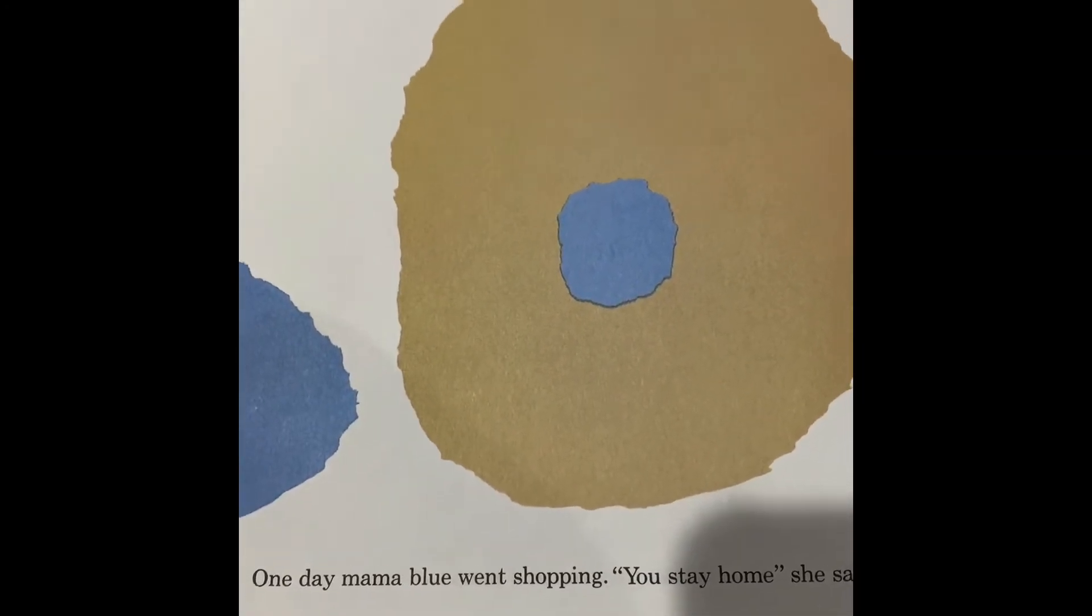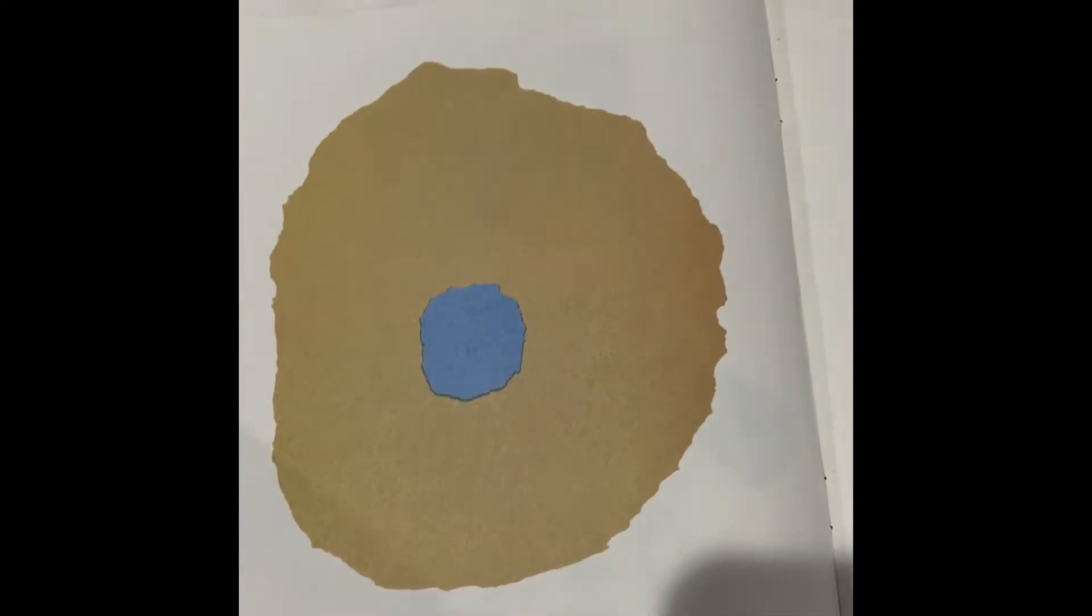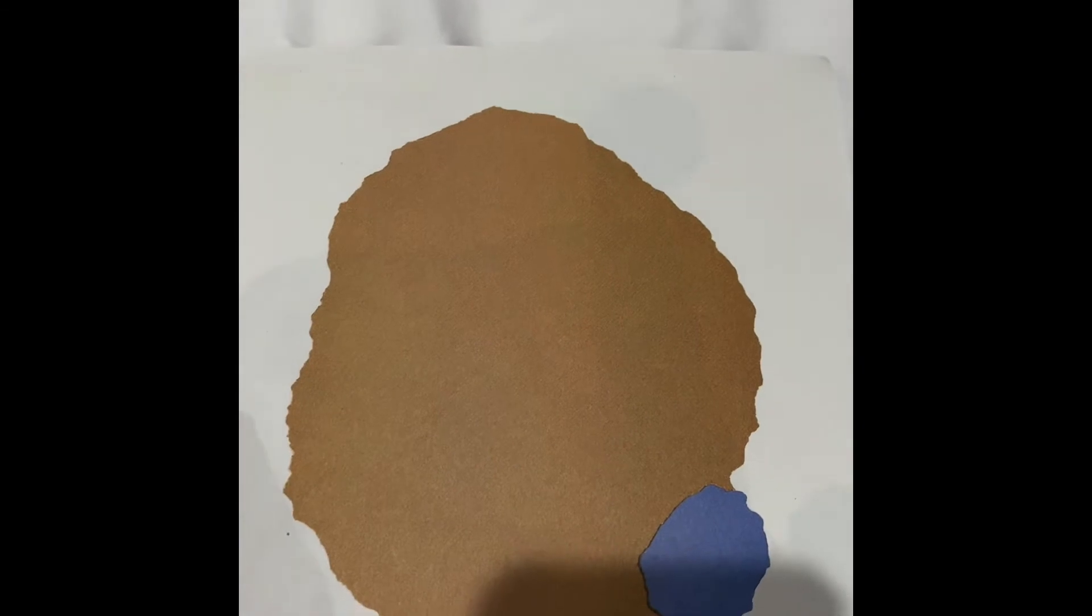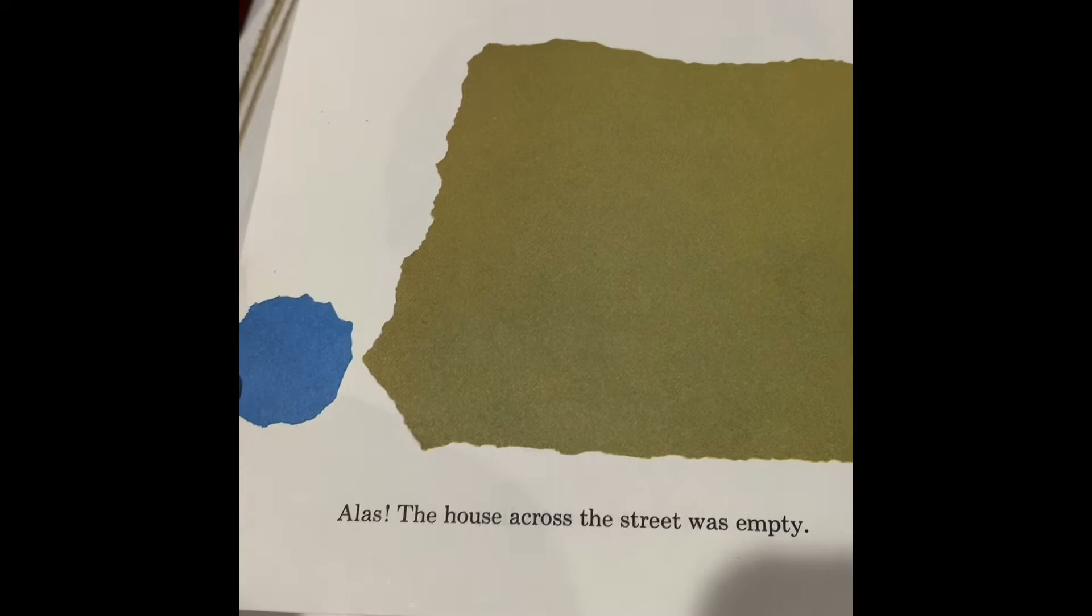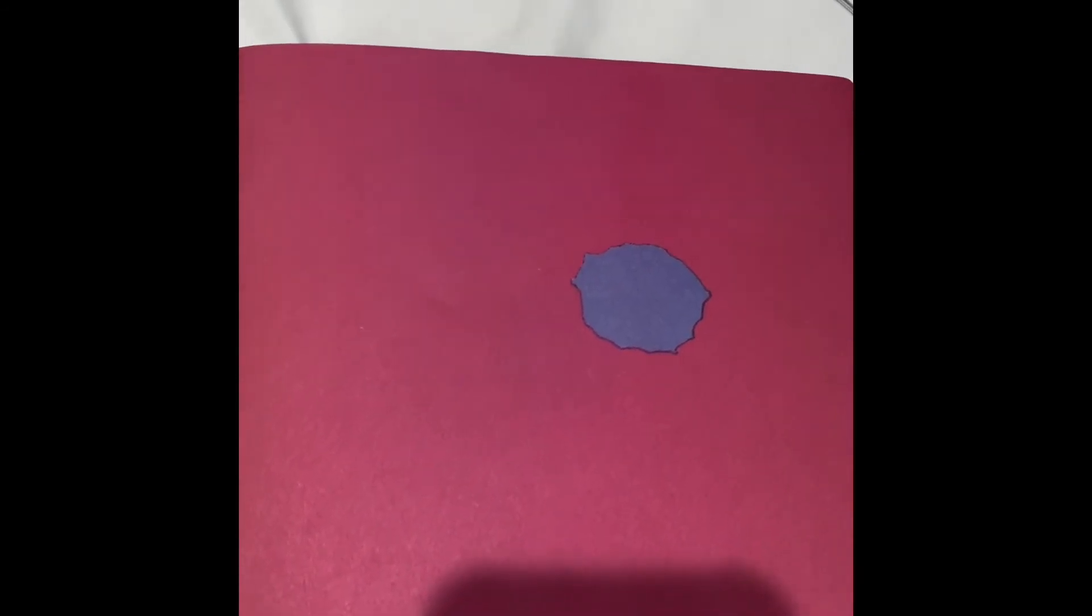One day, Mama Blue went shopping. You stay home, she said to Little Blue. But Little Blue went out to look for Little Yellow. Alas, the house across the street was empty. He looked here, and there, and everywhere, until suddenly, around the corner, there was Little Yellow!